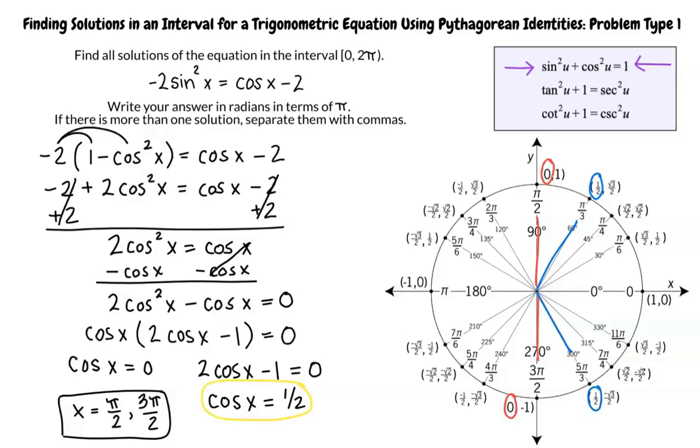It looks like the answers to our problem are π/2, 3π/2, π/3, and 5π/3. Yep, that's right. Good work.